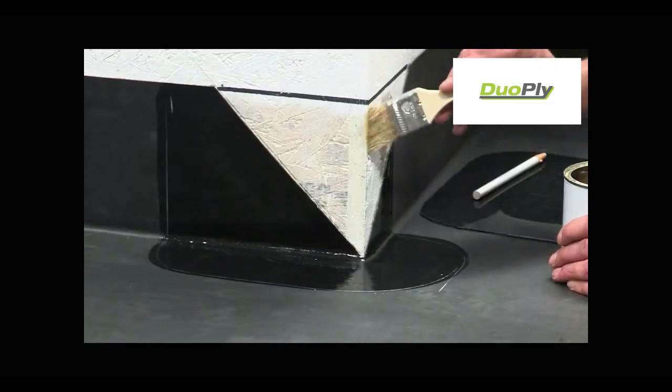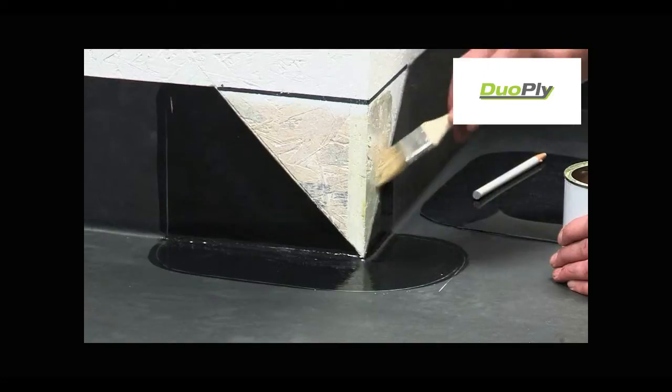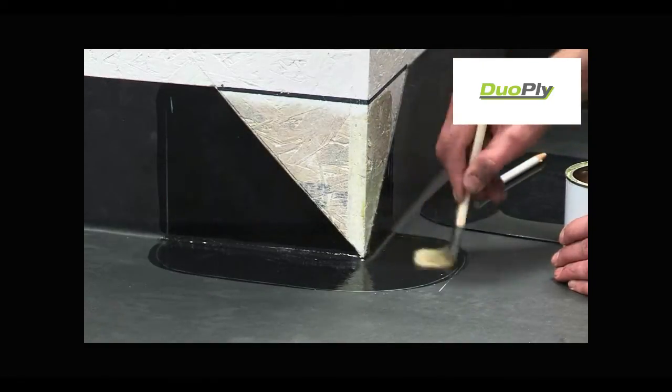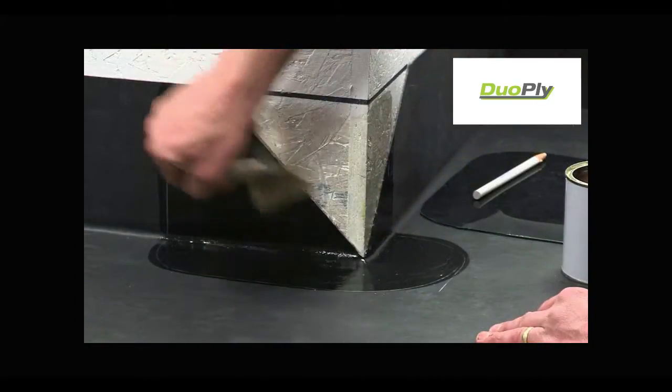Scrub primer into the surface, ensuring it is applied to the entire target area, including the substrate, whether this is brickwork, blockwork, plastic or virtually any surface encountered. Remove any pools of primer to create a thin, even coat.